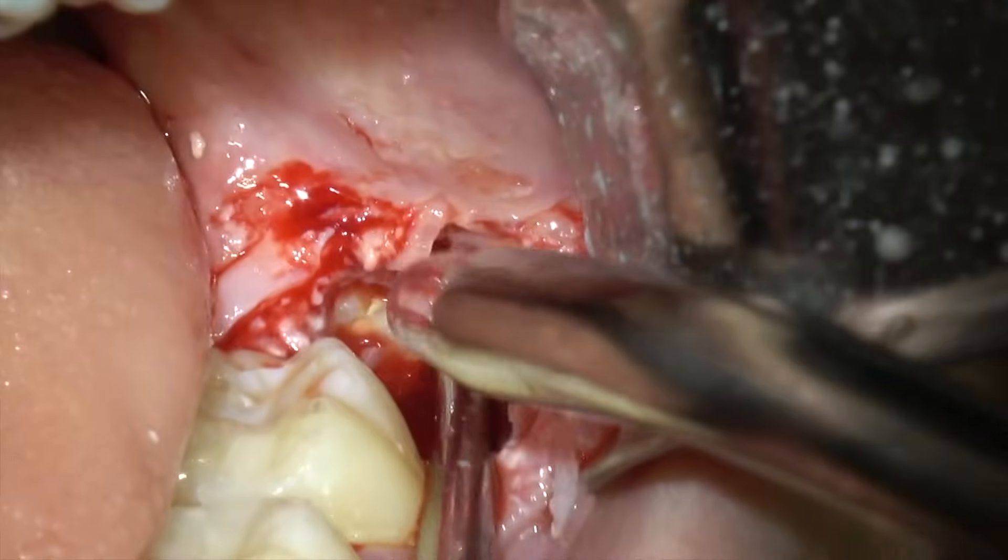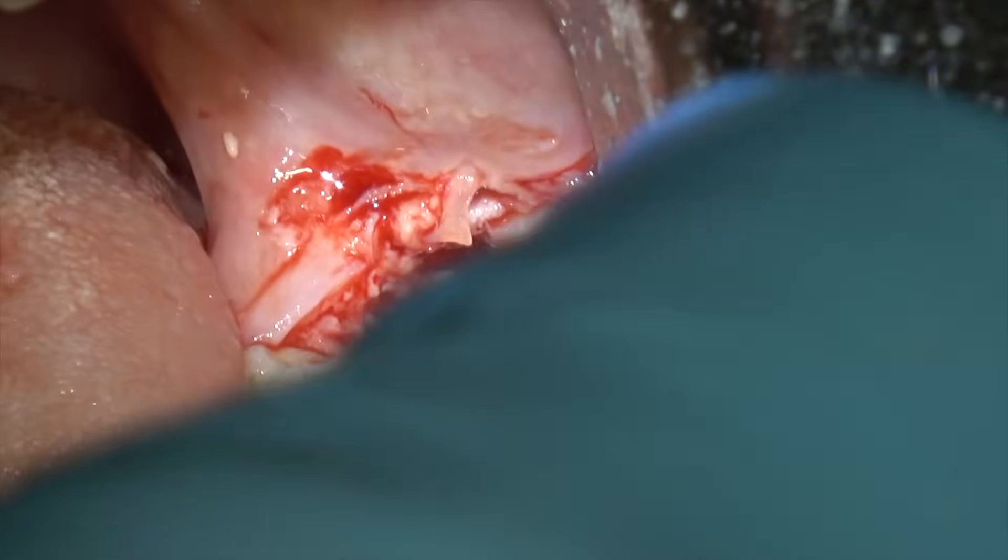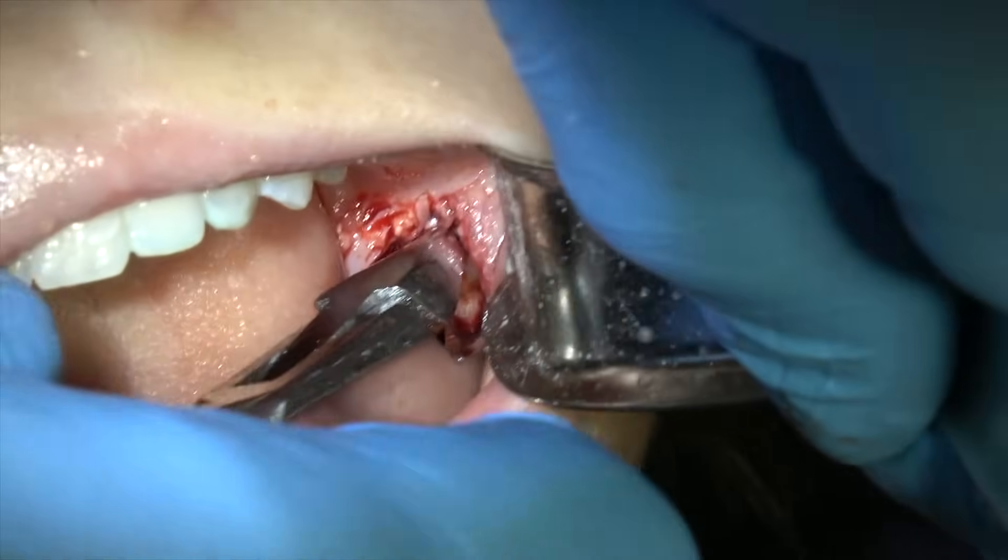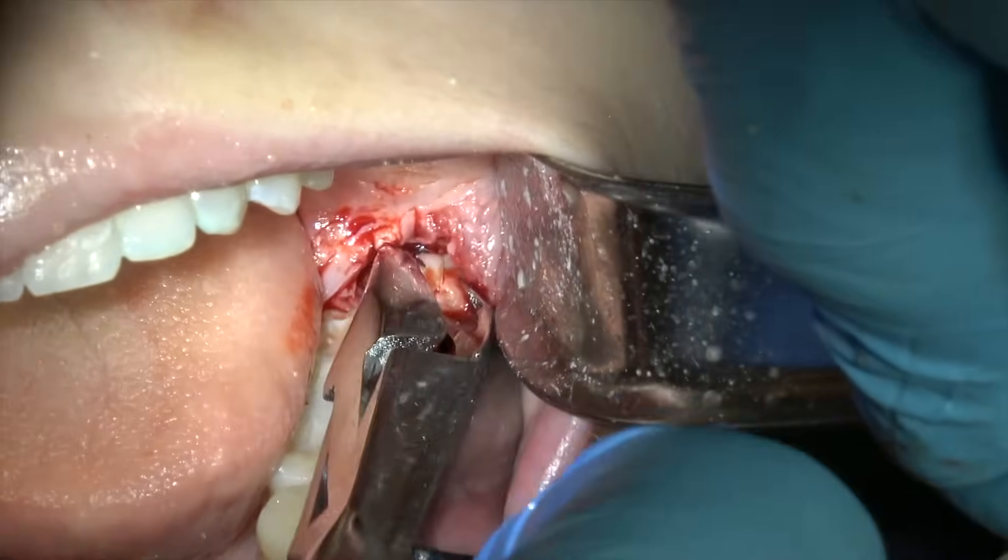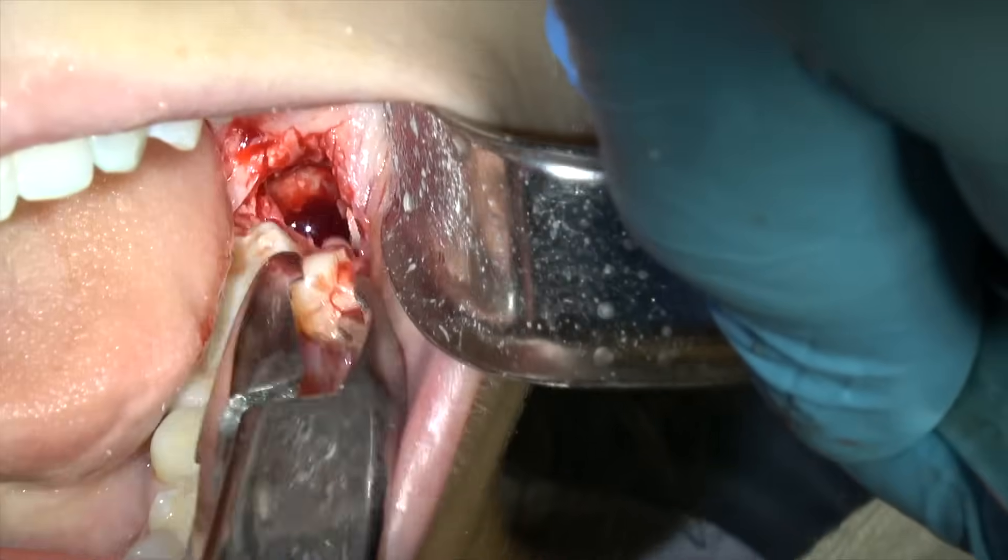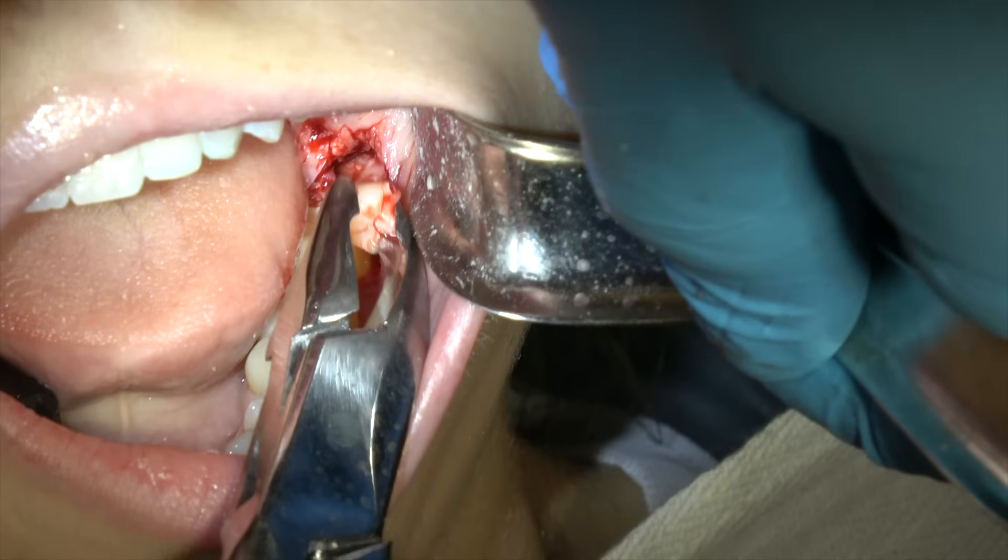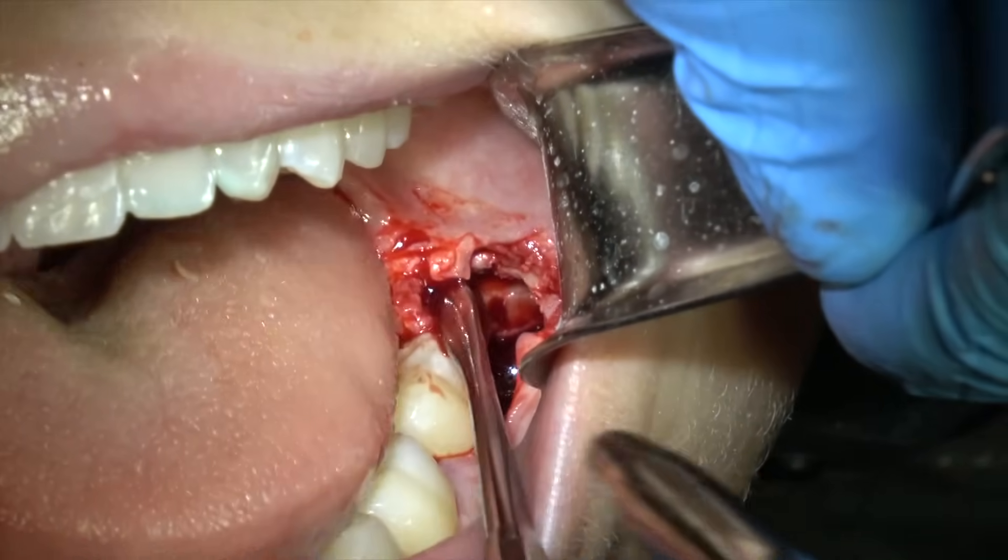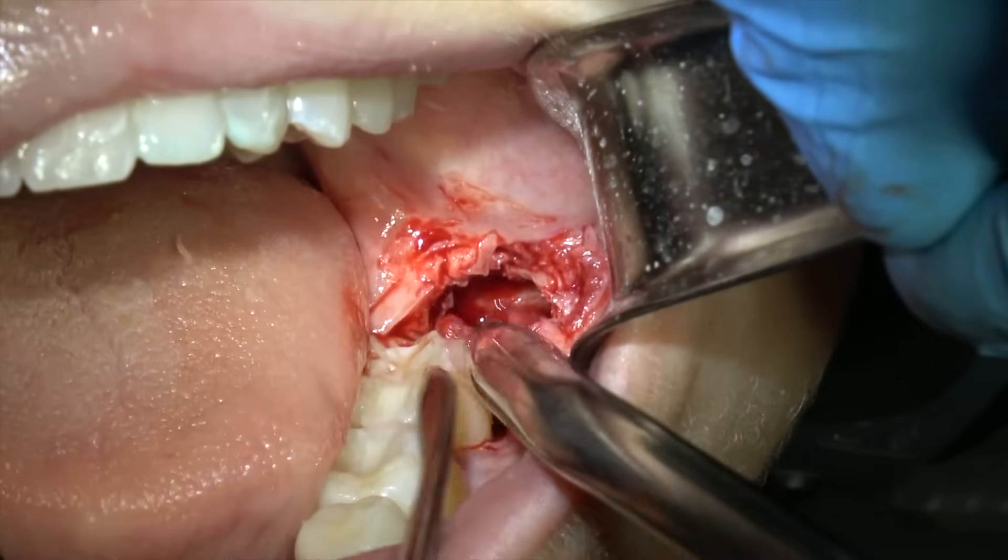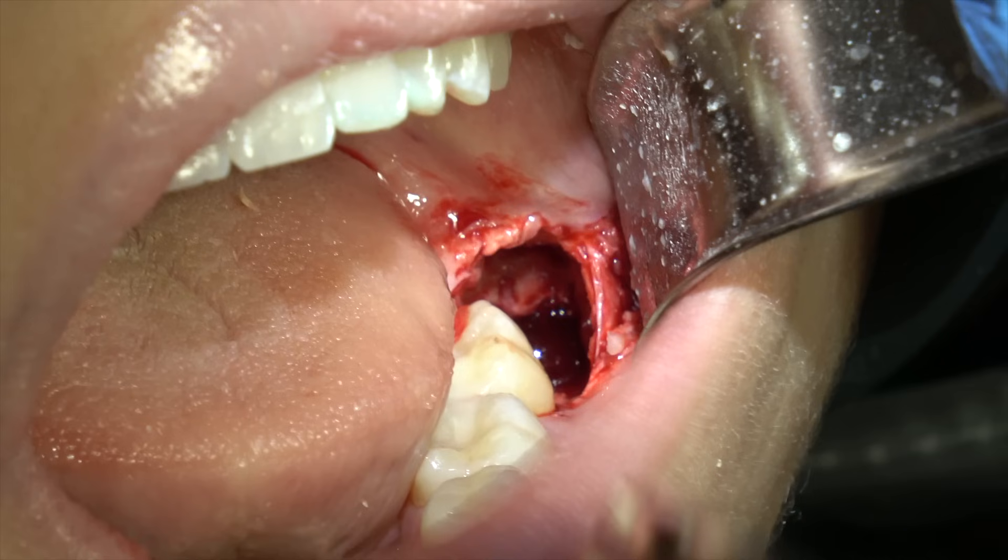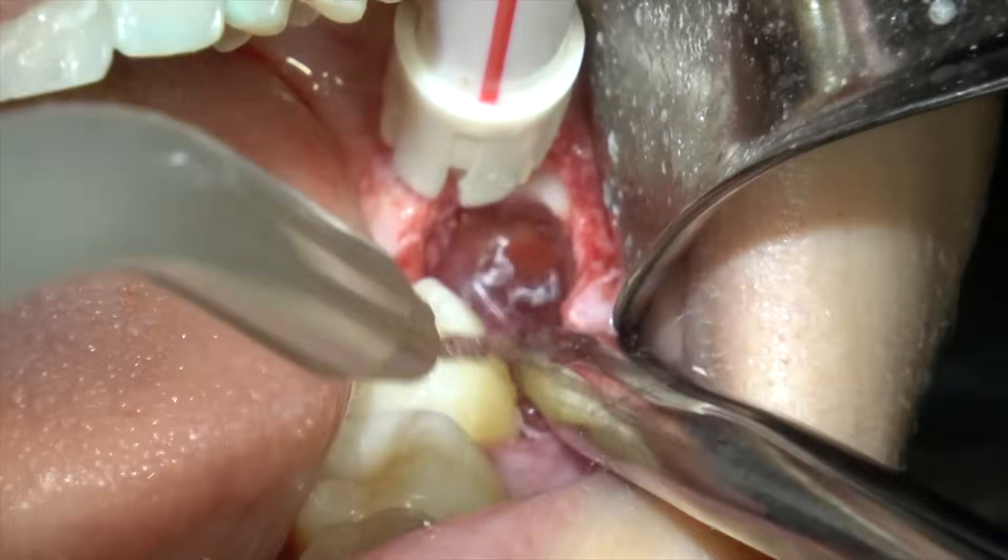And I've also separated the distal root from the mesial buccal and the mesial lingual roots. So I'm going to have three pieces here. Let's see them moving. And here come the other parts. Just be patient. Now I've really removed very little bone. I've mainly cut the tooth into pieces and lifted those out in three parts.